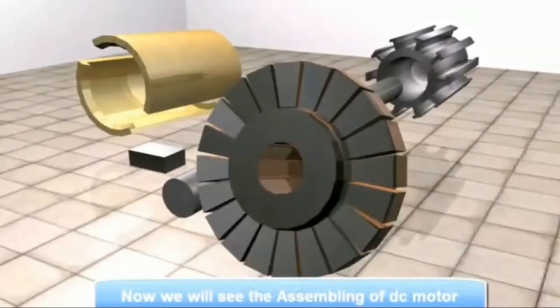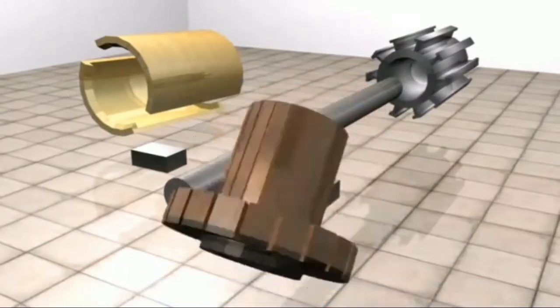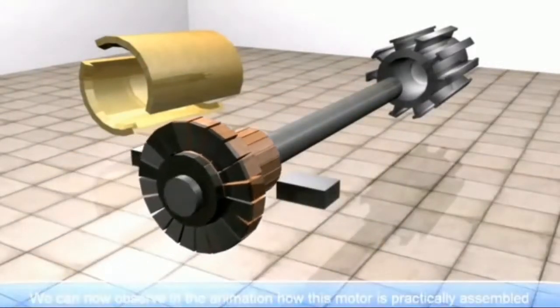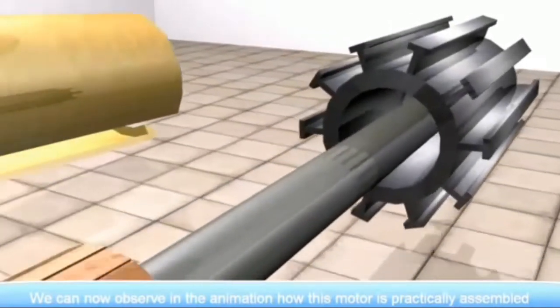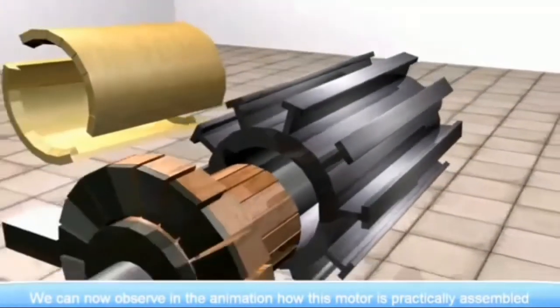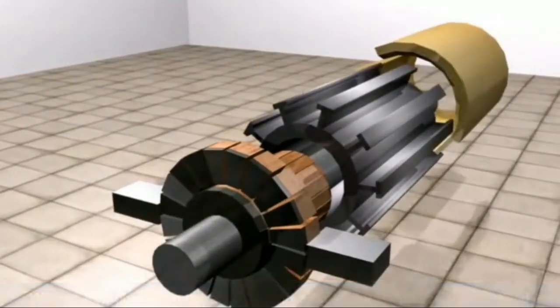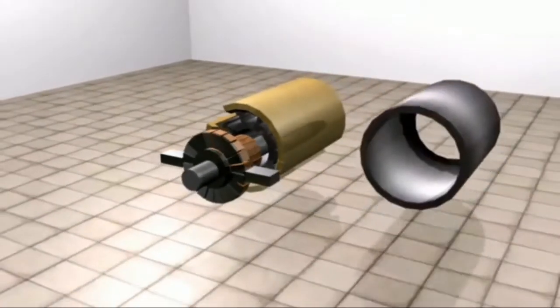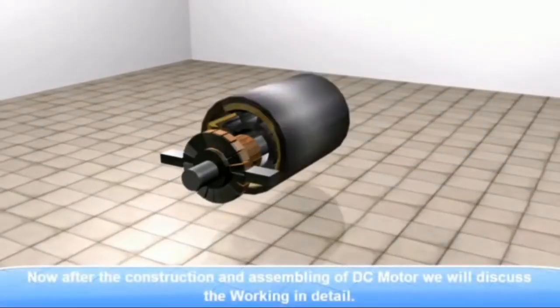Now we will see the assembly of the DC motor. We can now observe in the animation how this motor is effectively assembled. After the construction and assembly of DC motor, we will discuss the working detail.